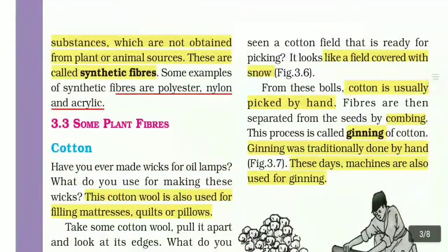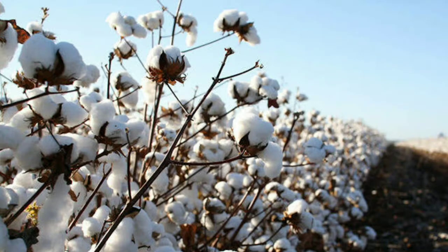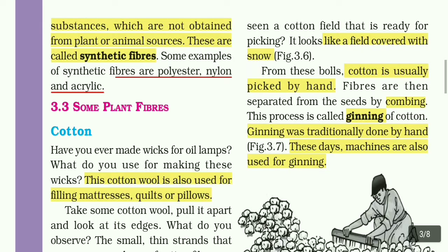Have you ever seen a cotton field that is ready for picking? It looks like a field covered with snow. Look at the picture on the screen. From these bolls, cotton is usually picked by hand. Fibers are then separated from the seeds by combing. This process is called ginning of cotton.